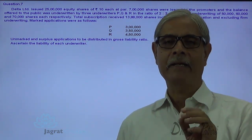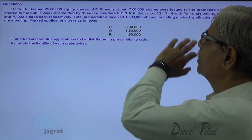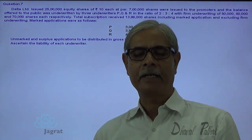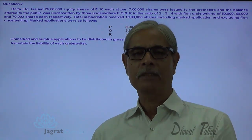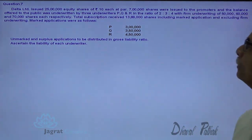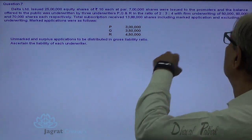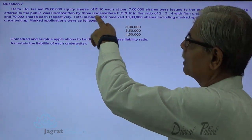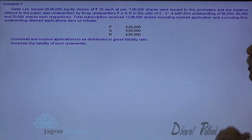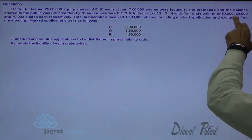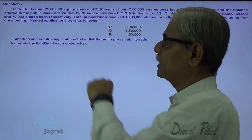No underwriting commission can be paid on these 7 lakh shares. Remaining shares are issued to public, on which underwriting commission could be paid as per the underwriting agreement and according to the provisions of company law. The balance offered to the public was underwritten by 3 underwriters P, Q and R in the ratio of 2:3:4 with firm underwriting of 50,000, 60,000 and 70,000 shares respectively.